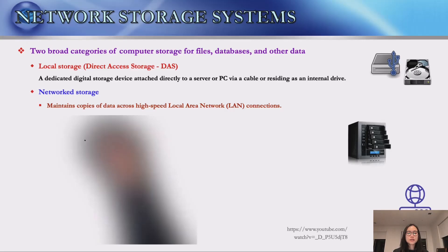Next, we'll introduce network storage systems. Organizations make use of two broad categories of computer storage for file databases and other data. The first category is local storage, commonly called direct access storage. It is dedicated digital storage devices that are attached directly to the server or PC. Most users' computers and most servers have direct access storage.